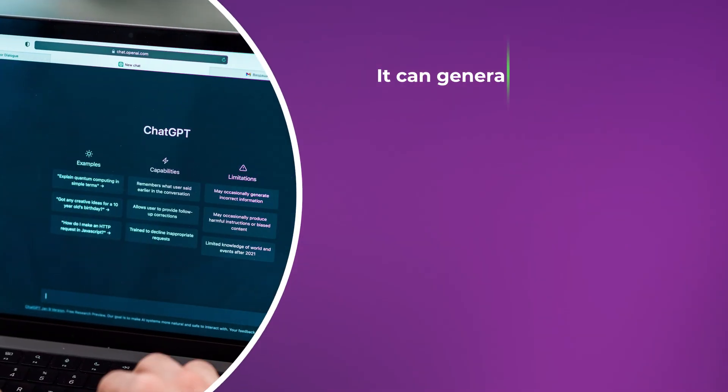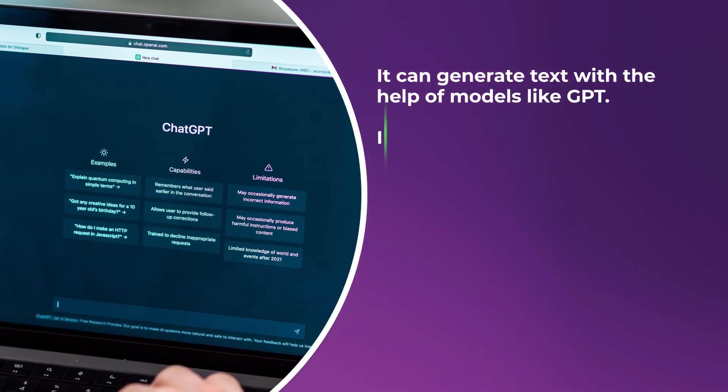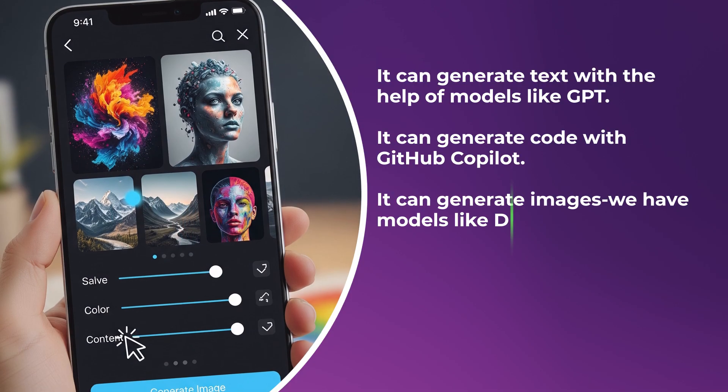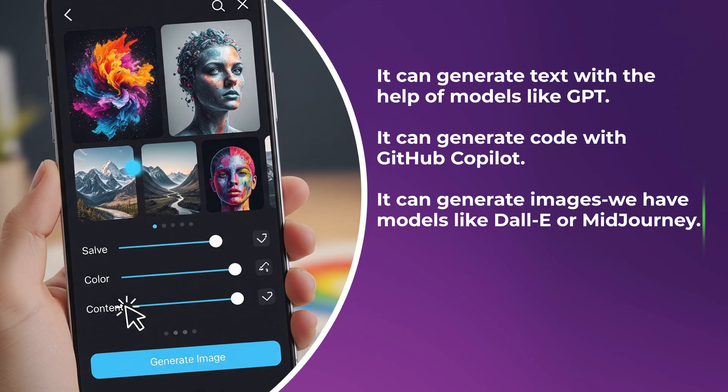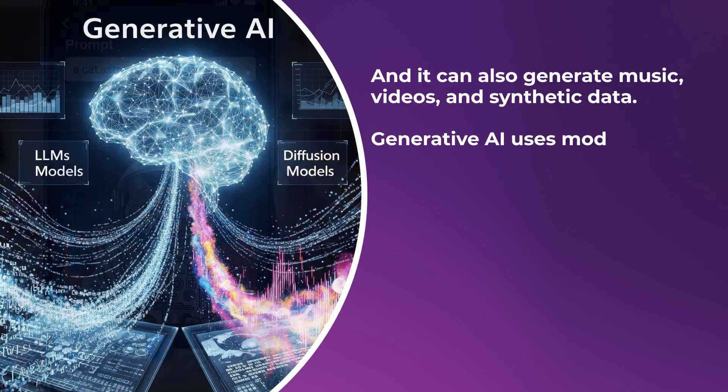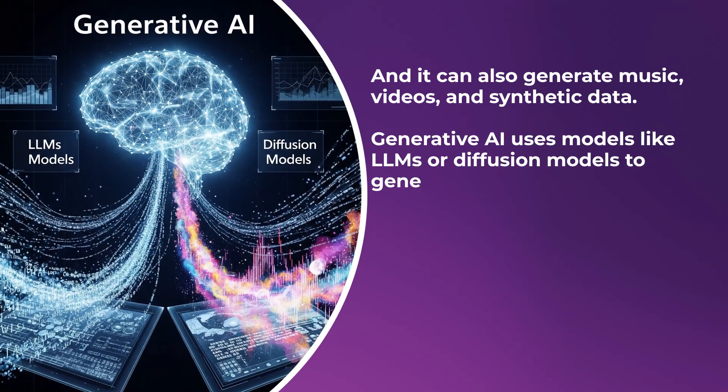Finally, we have Generative AI — where the actual magic happens. It does not only predict but generates content. It can generate text with models like ChatGPT, code like GitHub Copilot, images with models like DALL·E or Midjourney, and also music, videos, and synthetic data. Generative AI uses models like LLMs or diffusion models. In the FoodiCard application, we can generate recipes for groceries the user has selected, summarize their feedback, and understand the sentiment of their feedback.